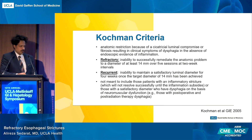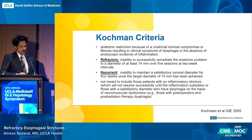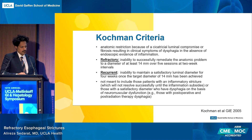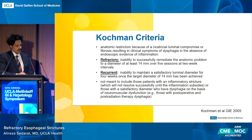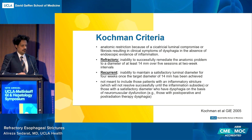My mentor at Penn, Mike Coachman, published an editorial because there were a lot of papers about strictures and people were calling things difficult without any standard definition. So he came up with the Coachman criteria, which is useful in research so we're all talking about the same thing when discussing difficult strictures. A refractory stricture is one that you can't successfully get to at least 14 millimeters over five sessions at two-week intervals.